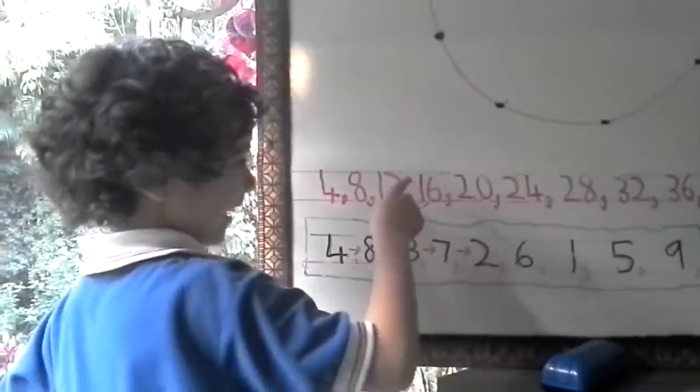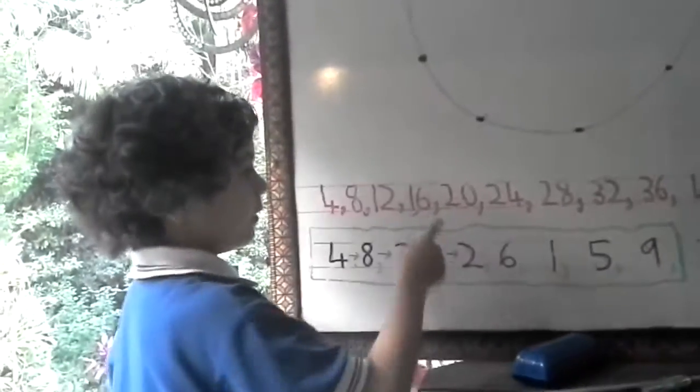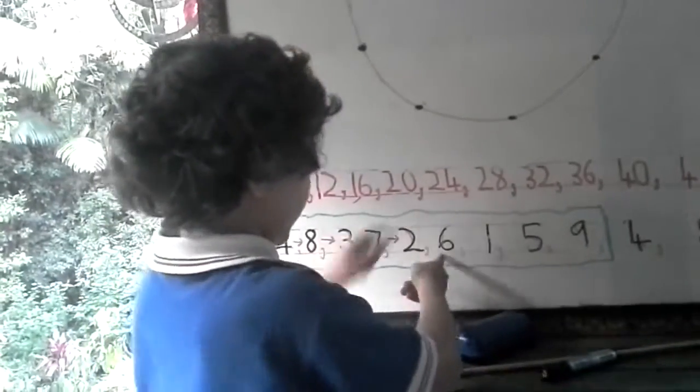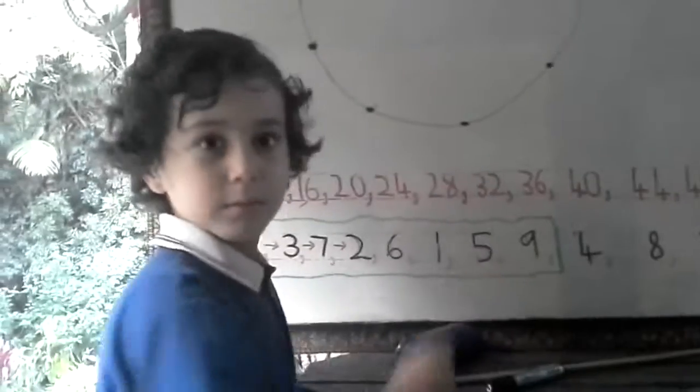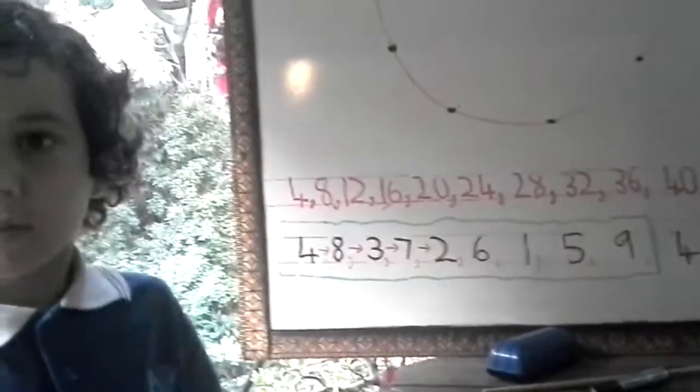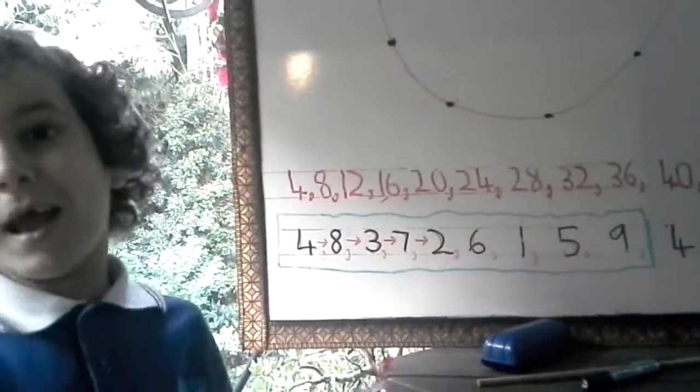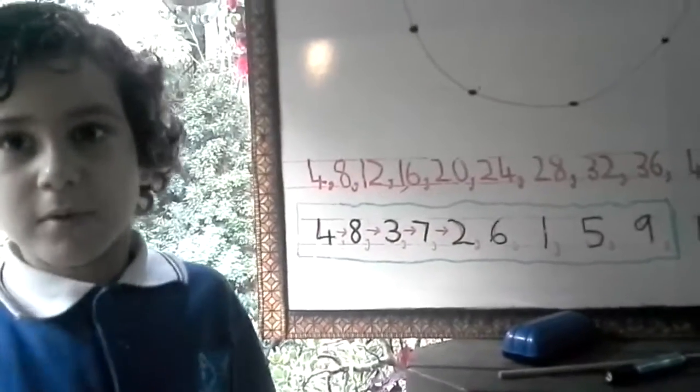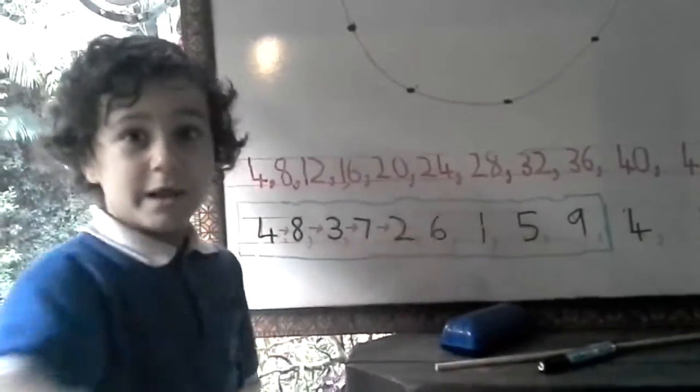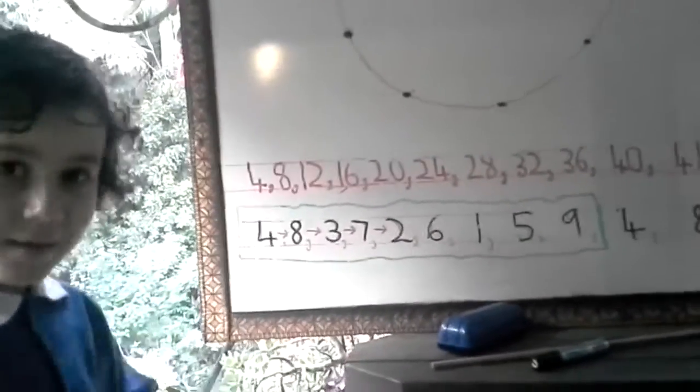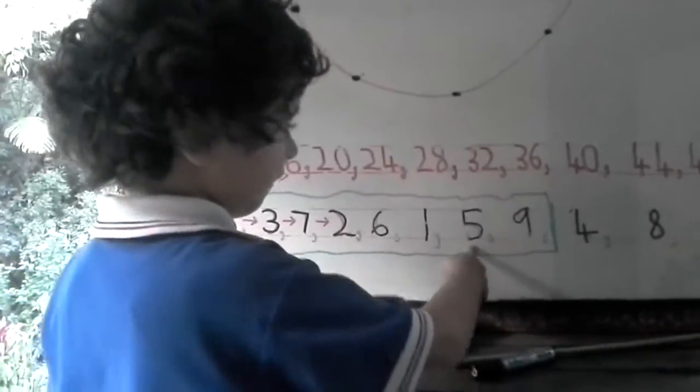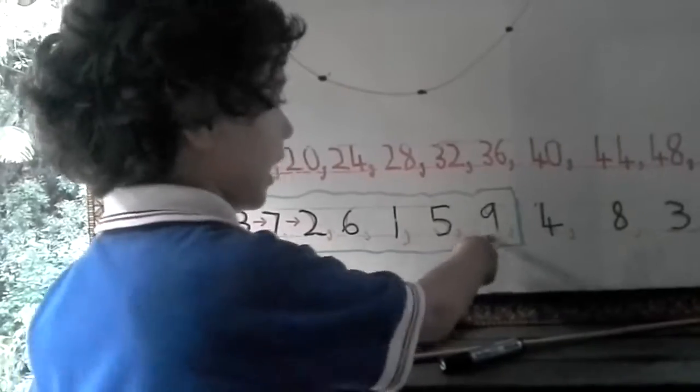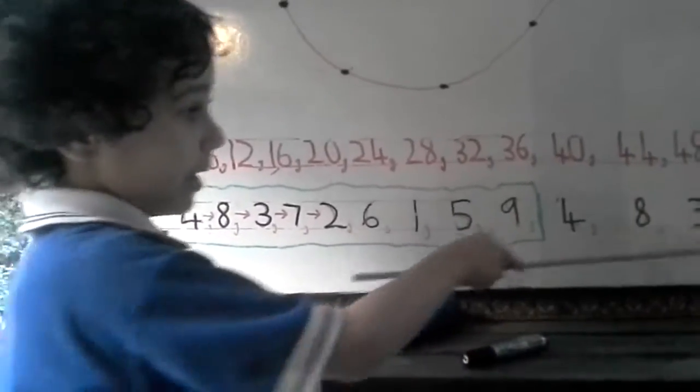Then over here 6 plus 1 is 7. Then over here 2. Then over here 6. Then over here 1. Hold it. With the 28, 2 plus 8 is what? What's 28 becomes? 10. And then what do you do with the 10? Put the 1 there. Because it's 1 and 0. I see. That took an extra step. Yes. Then we put the 5 there. Then we put the 9. But then it repeats itself.